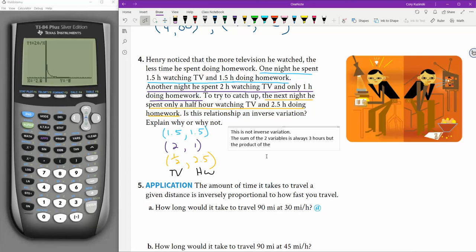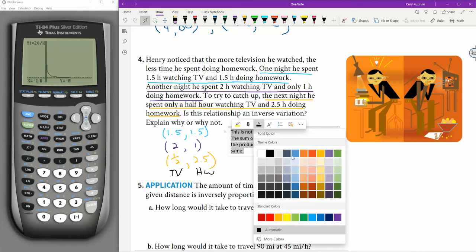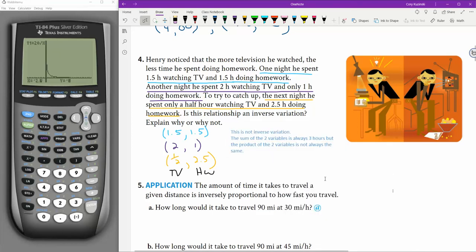but the product of the two variables is not always the same. So 1.5 times 1.5 is that. 2 times 1 is that. And 0.5 times 2.5 is that. That is not inverse variation. All those numbers should be the same every time, those products.